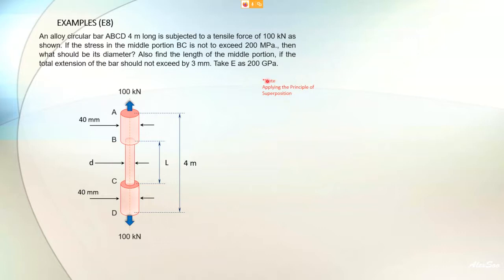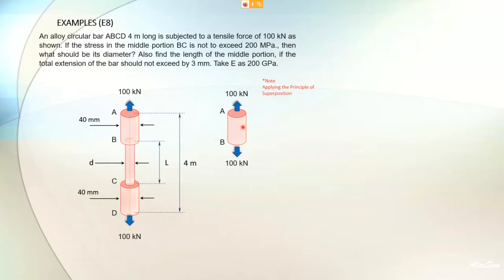We apply the principle of superposition. For section AB, if we remove the rest of the bar for equilibrium of this section, since the applied force is 100 kN, we must consider 100 kN acting downwards. So section AB carries 100 kN.